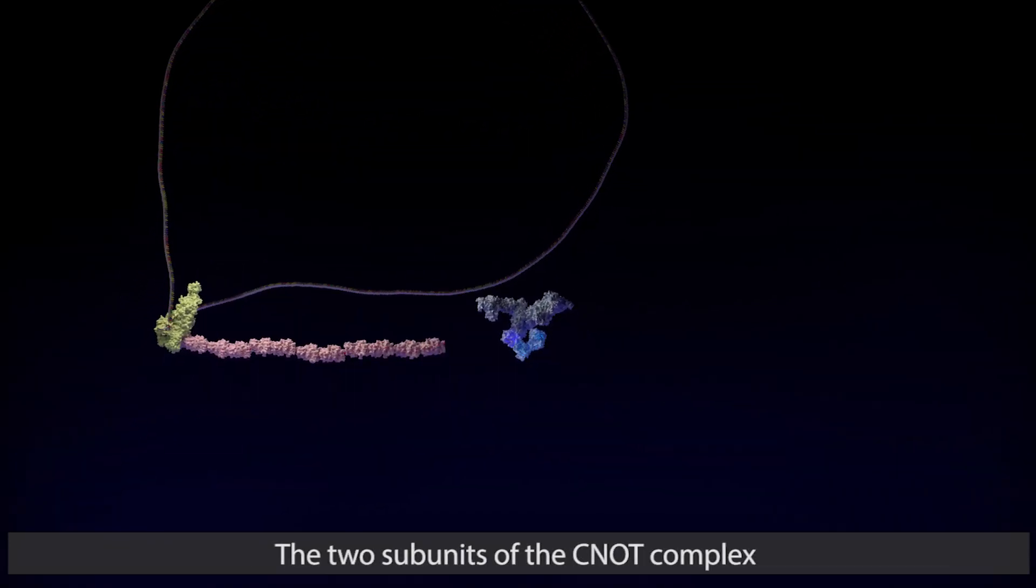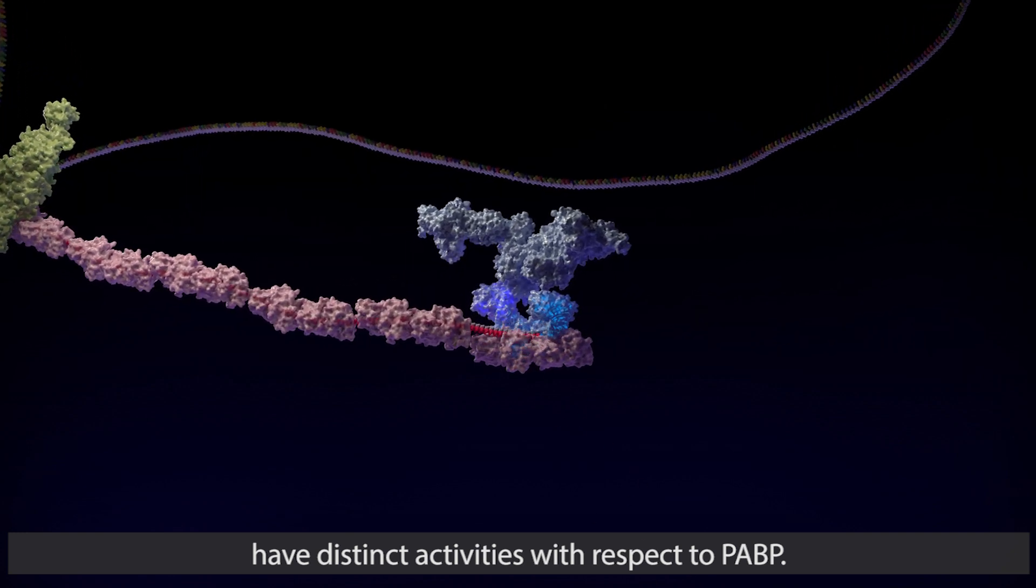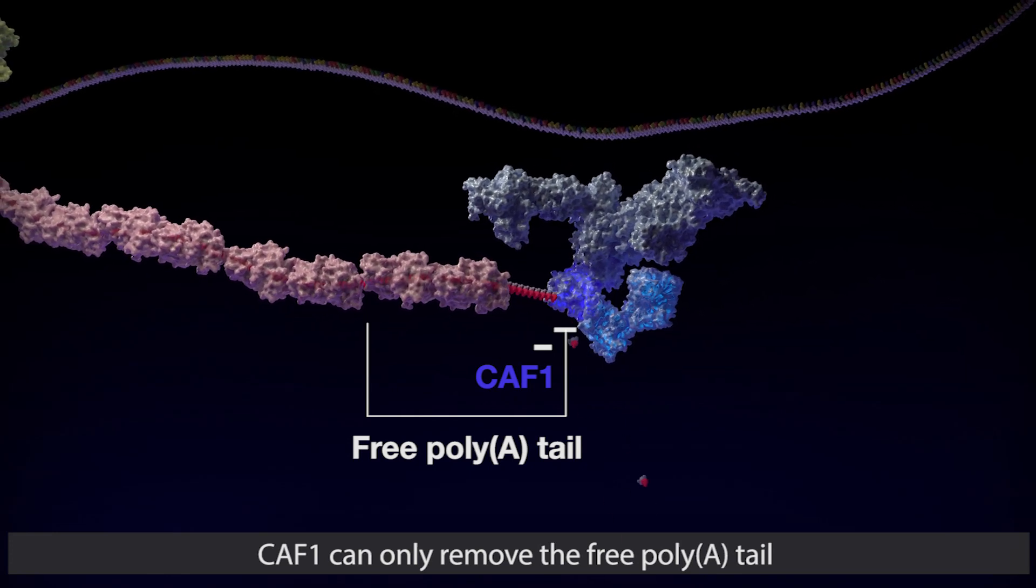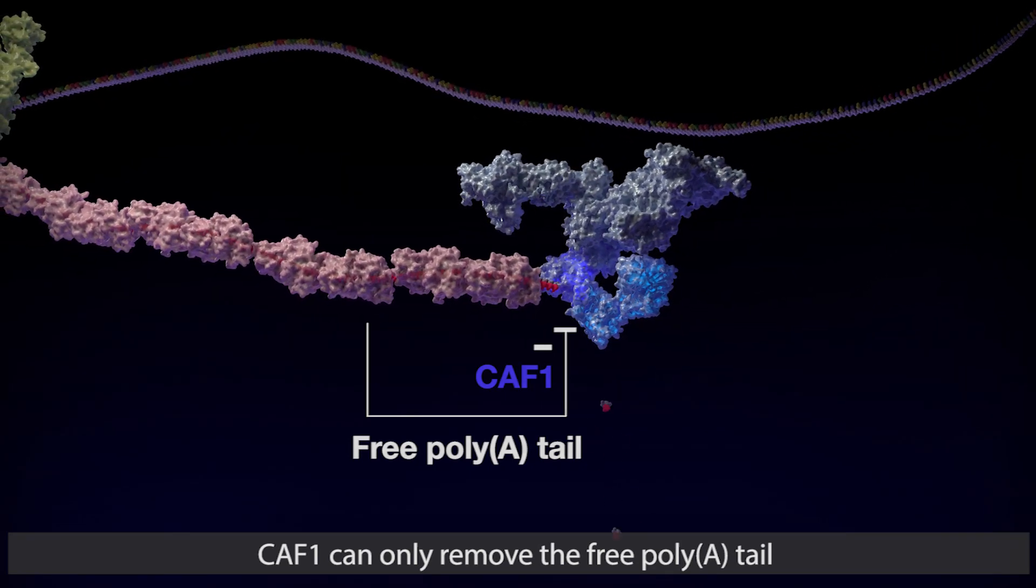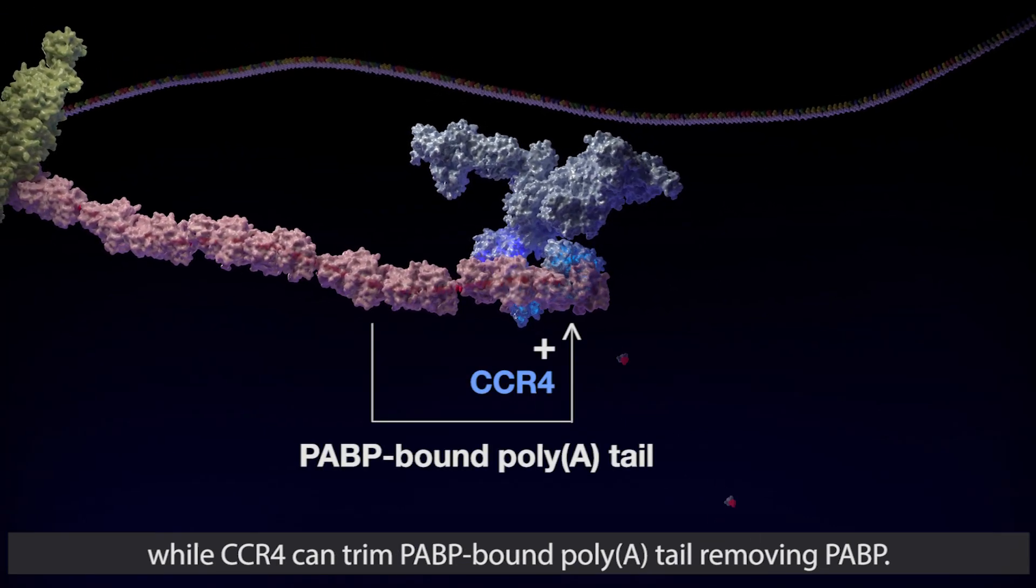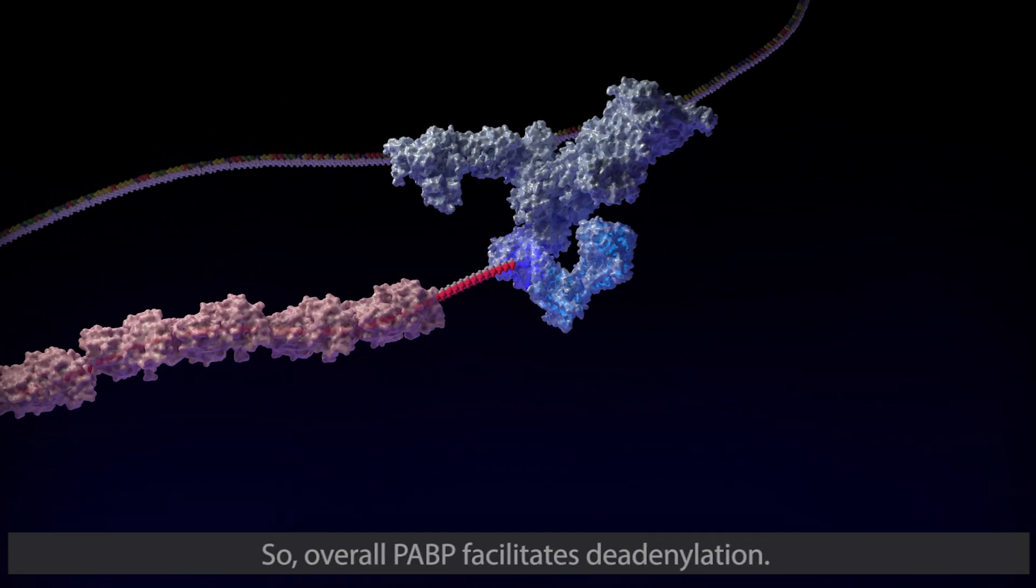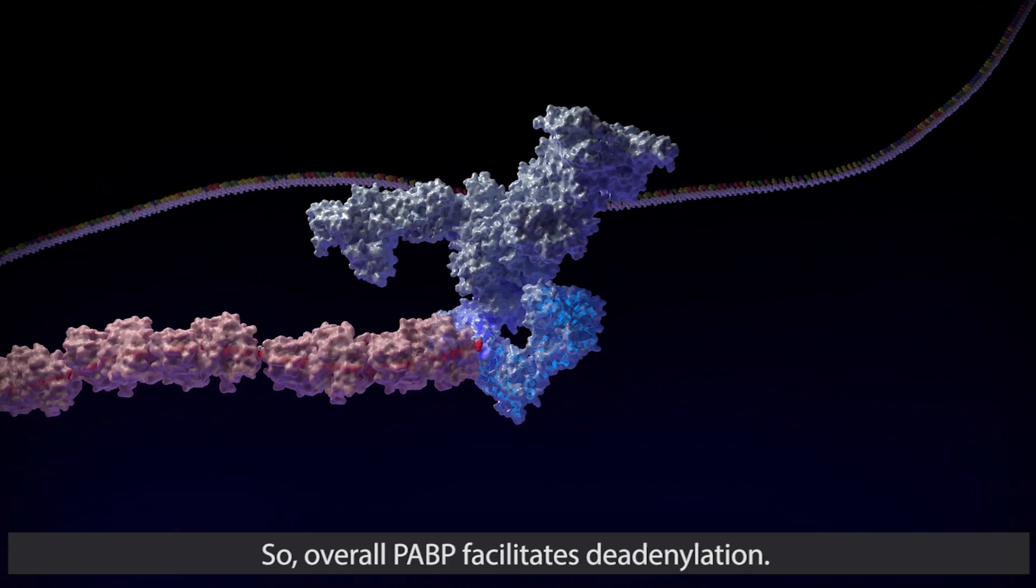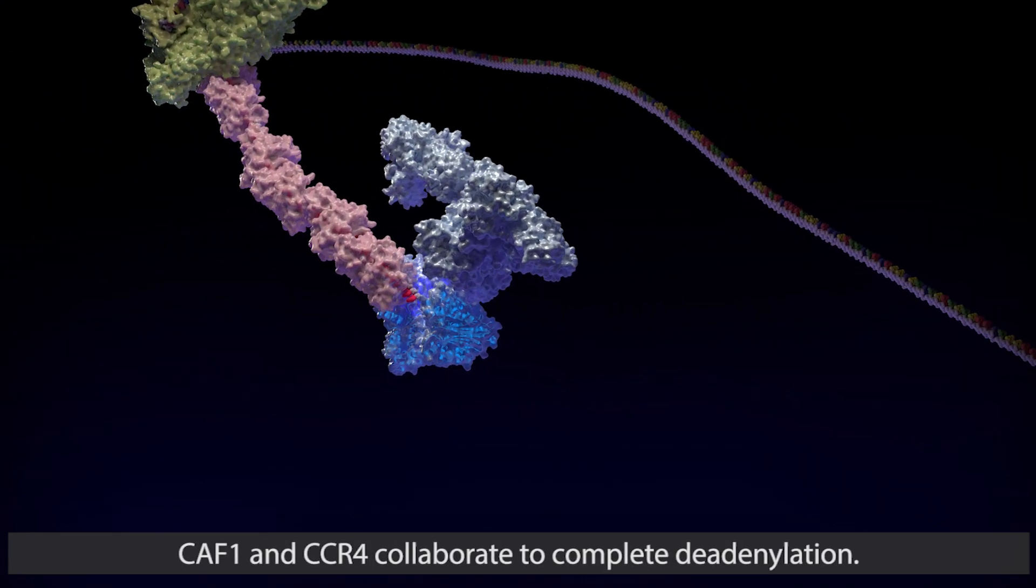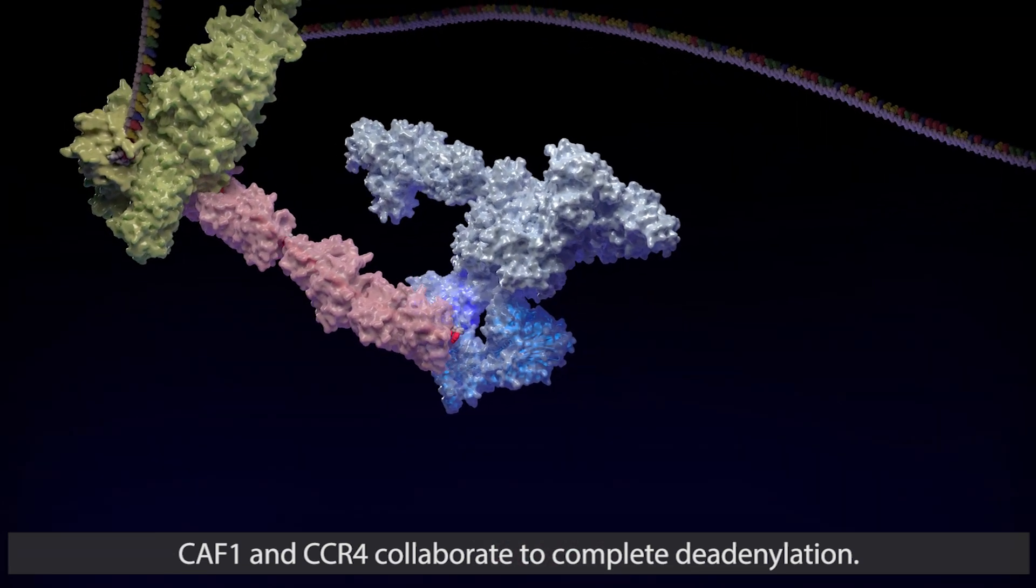The two subunits of the CNOT complex have distinct activities with respect to PABP. CNOT1 can only remove the free poly(A) tail, while CCR4 can trim PABP-bound poly(A) tail, removing PABP. So overall, PABP facilitates deadenylation. CNOT1 and CCR4 collaborate to complete deadenylation.